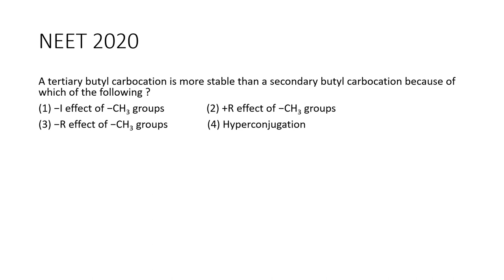There are four options given. Two of them are about the R effect, which is the resonance effect. One is the I effect, which is the inductive effect, and the fourth option is hyperconjugation. The answer is actually hyperconjugation, since the butyl carbocations also have an electron-donating inductive effect, but that option is not given here. So all other three options are not possible in case of a tertiary butyl carbocation.